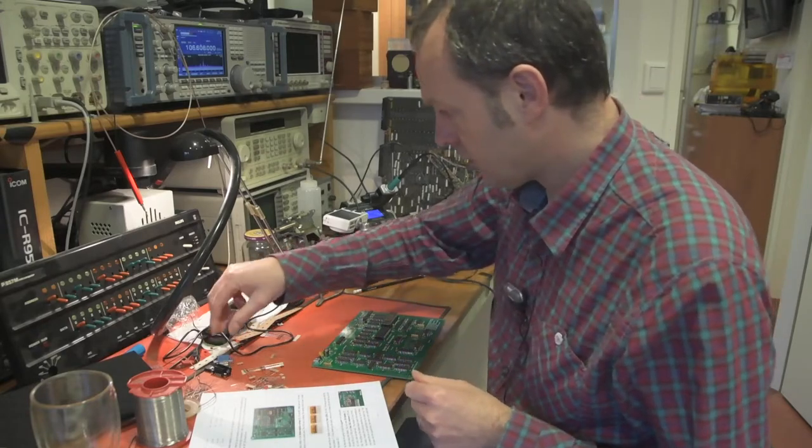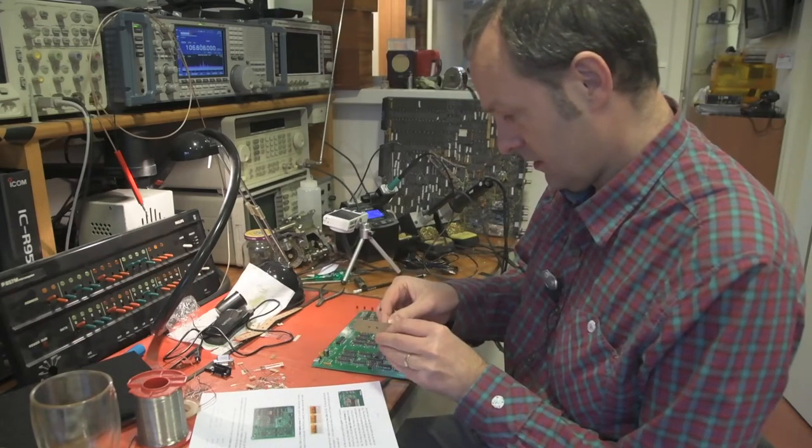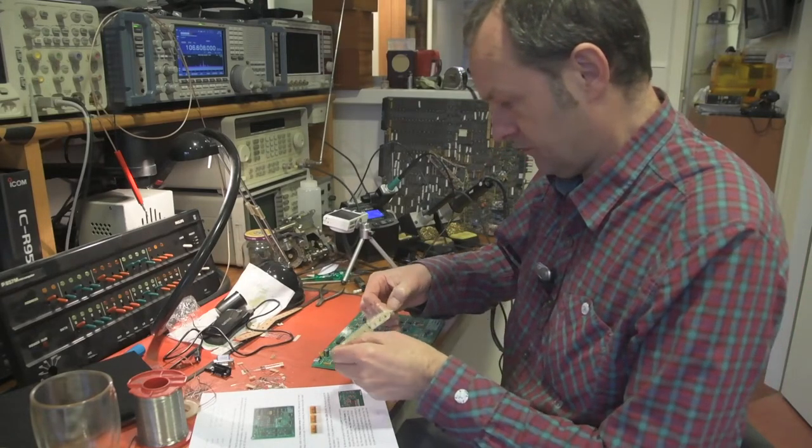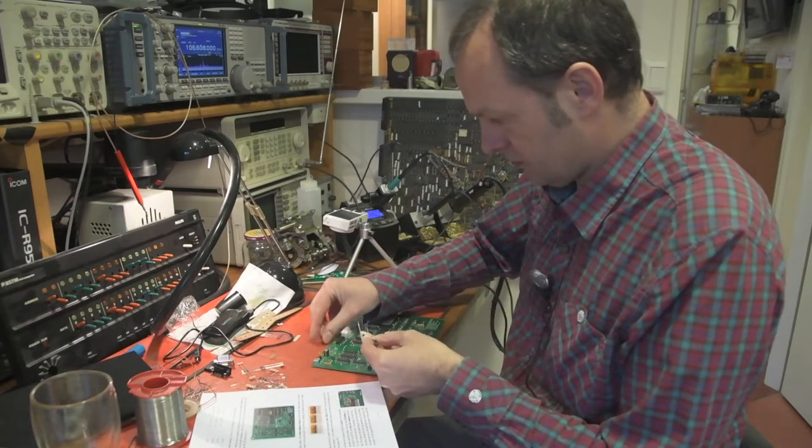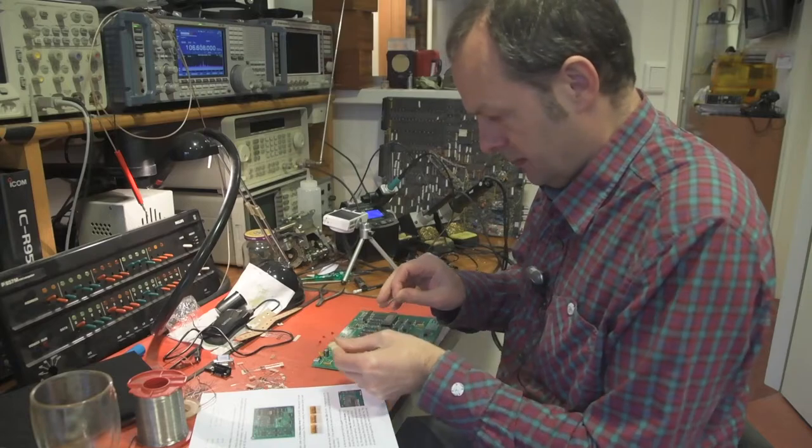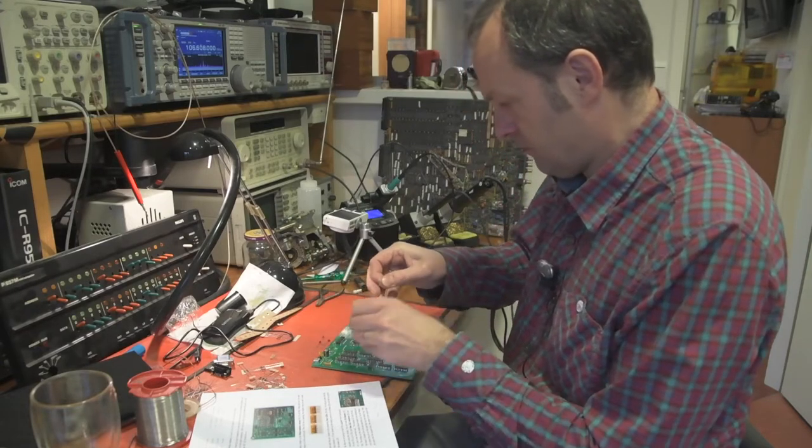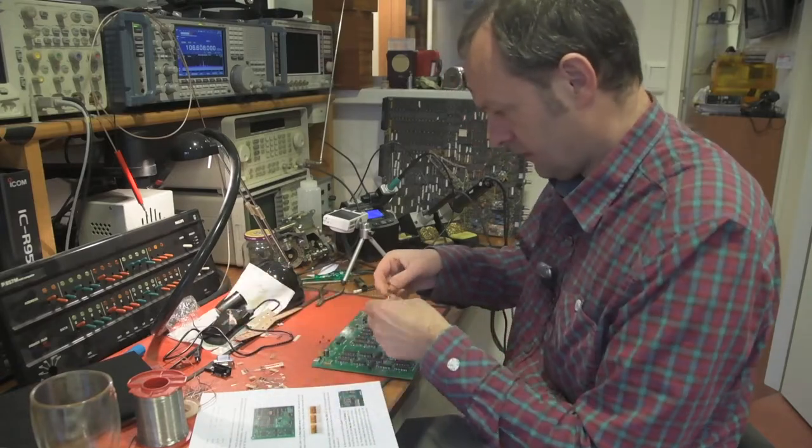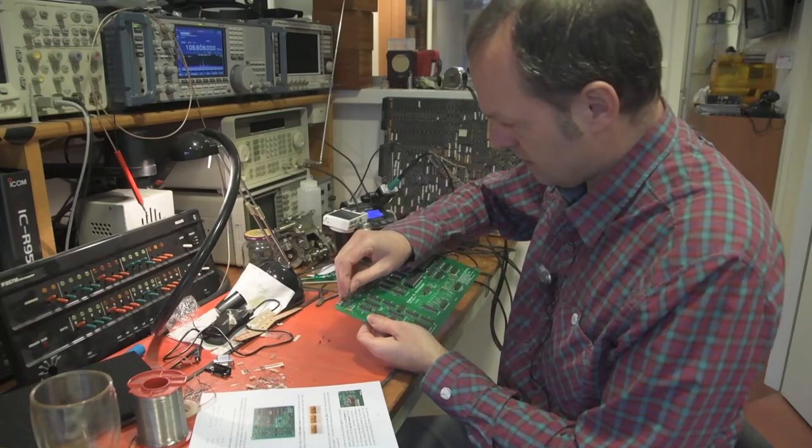We are also going to solder in the blinking lights, the four remaining LEDs that go on the top left. As we've already learned, the LEDs have a positive and negative side. The positive is the long one, which is marked by a plus sign on the board.